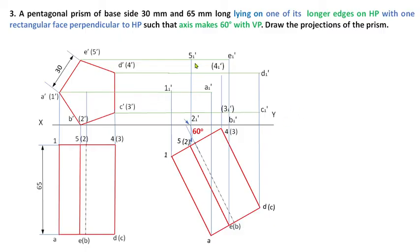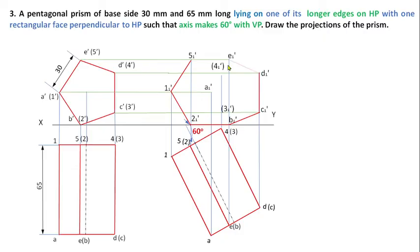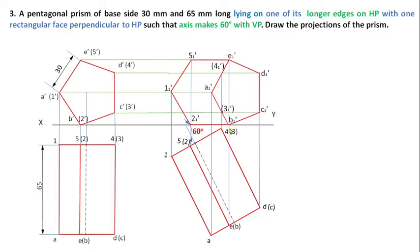Now join the boundaries of this front view with thick lines. The boundaries are: 5-1-dash to 1-1-dash, 1-1-dash to 2-1-dash, 2-1-dash to B-1-dash, B-1-dash to C-1-dash, C-1-dash to D-1-dash, D-1-dash to E-1-dash, E-1-dash to 5-1-dash. An observer standing in front can see the entire pentagon ABCDE, so complete the A-B-C-D-E pentagon with thick lines: A-1-dash, E-1-dash, and A-1-B-1-dash connections.